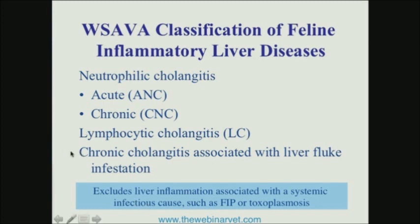Only for people who live in much warmer climates, there is a form of cholangitis associated with liver fluke infestation. I'm not going to talk about that one — I've actually never seen one. So we're going to focus on the first two. I did want to point out that this classification scheme excludes causes of liver inflammation associated with a systemic infectious cause like FIP or toxoplasmosis, so those would not fall under this classification.